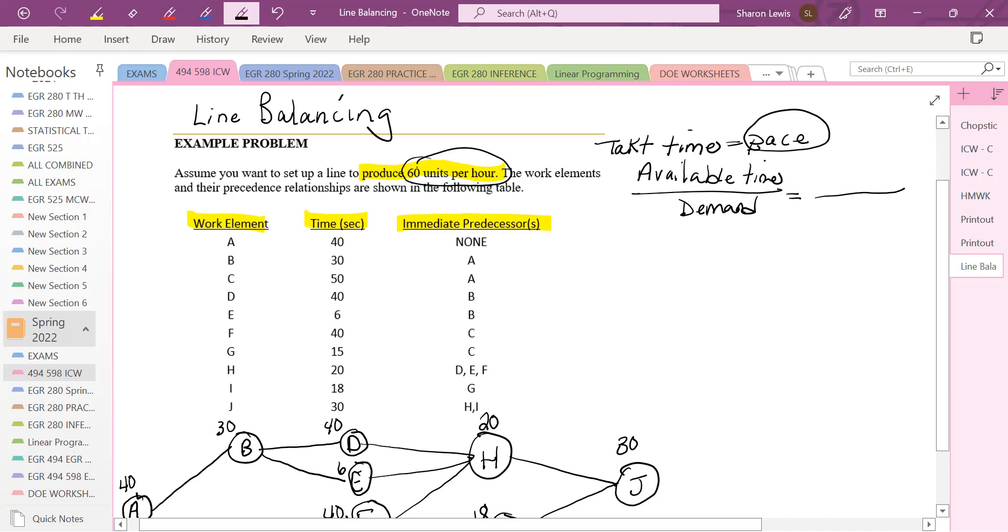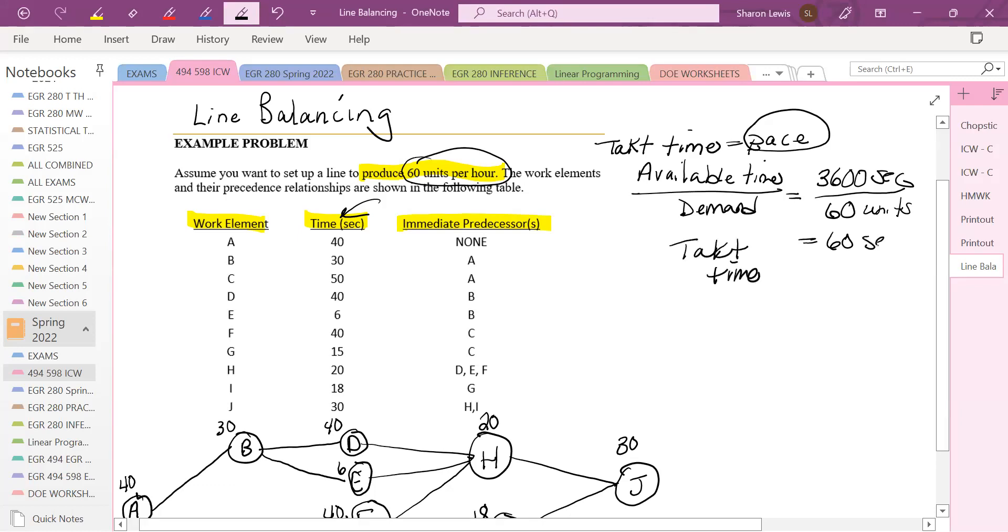So within an hour, we've got 3600 seconds. And the reason I'm choosing seconds is tact time is often calculated in seconds, but also our task times are given in seconds. So within that one hour or 3600 seconds, we need to make 60 units. So our pace of the assembly line is equal to 60. So every 60 seconds, the assembly line needs to move in order to meet the demand.